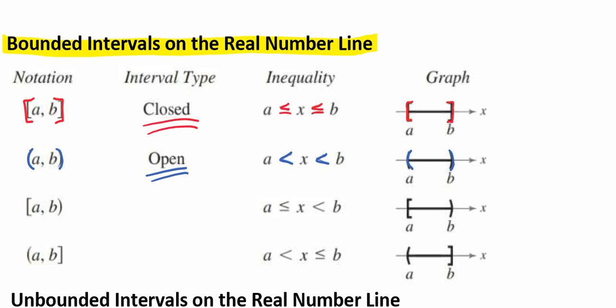There are some different variations. You could have a closed bracket on the A side and a parentheses on the B side. This won't be considered open or closed. When we write that, we're going to say that A is less than or equal to X, which is less than B. When we graph that, we're going to have a bracket on our A endpoint and a parentheses on our B endpoint.